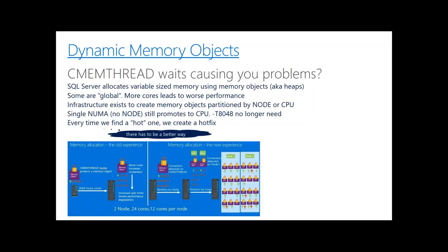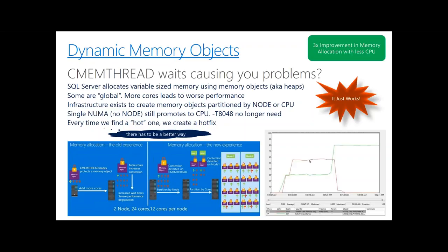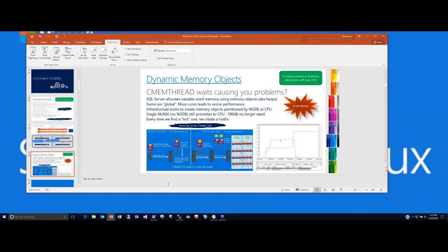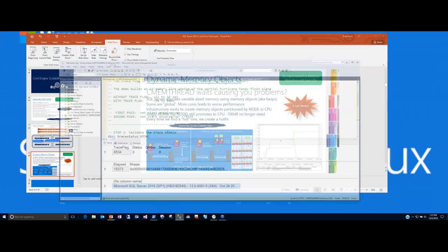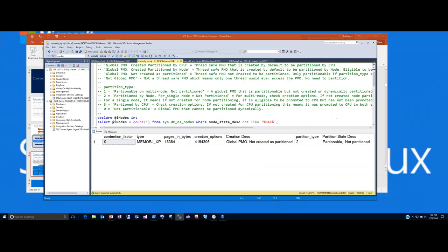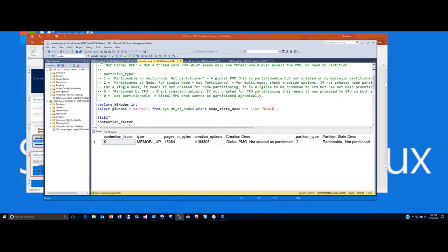Let me flip over and show you a demo. This is Management Studio. This shows a particular memory object that is not created as partitioned by default, but you'll see a contention factor that we look at to decide whether to partition it. This functionality is so good that I have to introduce an undocumented trace flag just to turn off the feature so you can actually see the problem happen slowly enough to observe the behavior. I have PerfMon running with thread-safe memory object waits, processor time for SQL, and batch requests.